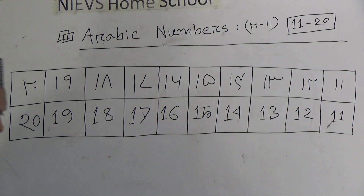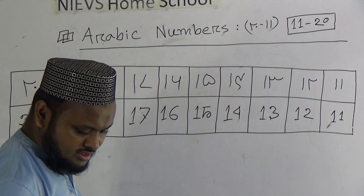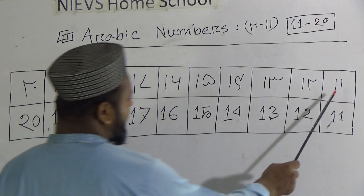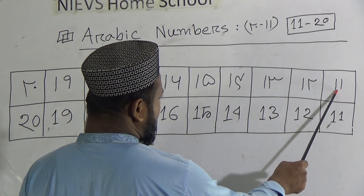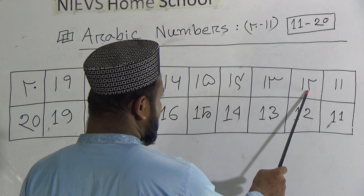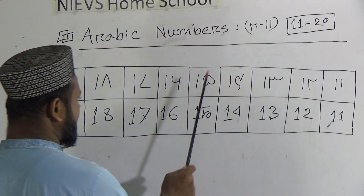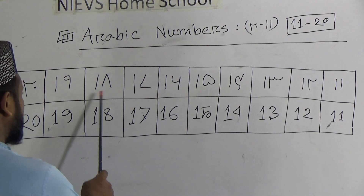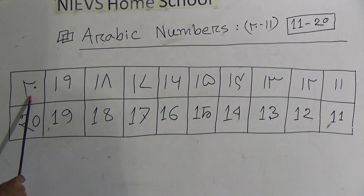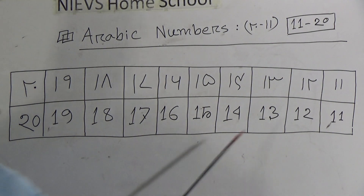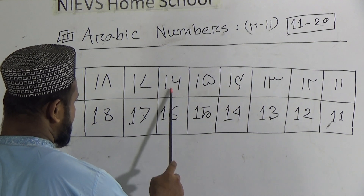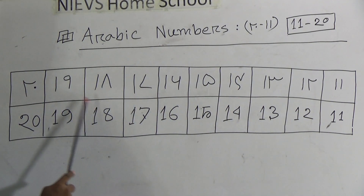Dear students, now I want to repeat again. In Arabic: ahada asara, isna asara, salas atashara, arva atashara, khamsa atashara, sitta atashara, sabatashara, samanyatashara, tisa atashara, ishroona. These are equal to 11, 12, 13, 14, 15, 16, 17, 18, 19, and 20.